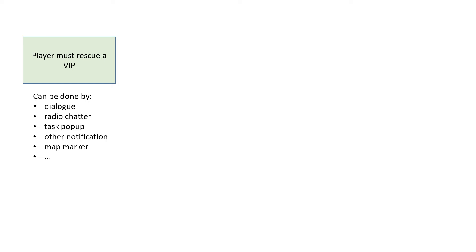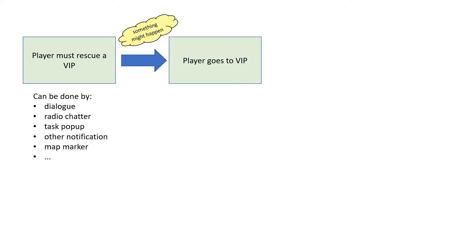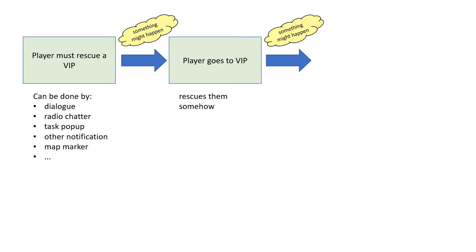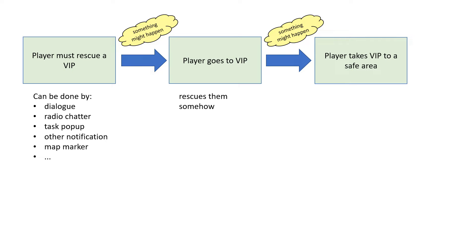The player then goes to the VIP's location. They can face enemies on the way there — again, it doesn't matter. The player then reaches the VIP and takes them to another location. They might encounter enemies and it doesn't really matter right now. Finally, the player reaches the designated area, finds the helicopter that is waiting for the VIP. The VIP gets inside the helicopter, it flies away, task is complete.